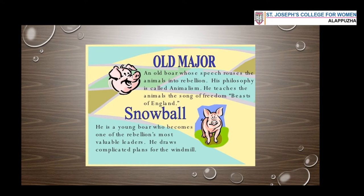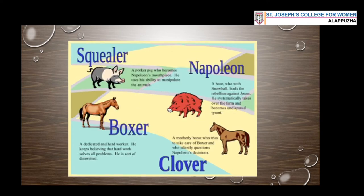After Old Major comes Snowball. Snowball is a young pig who becomes one of the rebellion's most valuable leaders. Snowball draws very complicated plans. Then we have Napoleon, who is one of the leaders along with Snowball — another valuable leader of the rebellion. Napoleon and Snowball were the two leaders of the rebellion against Mr. Jones.